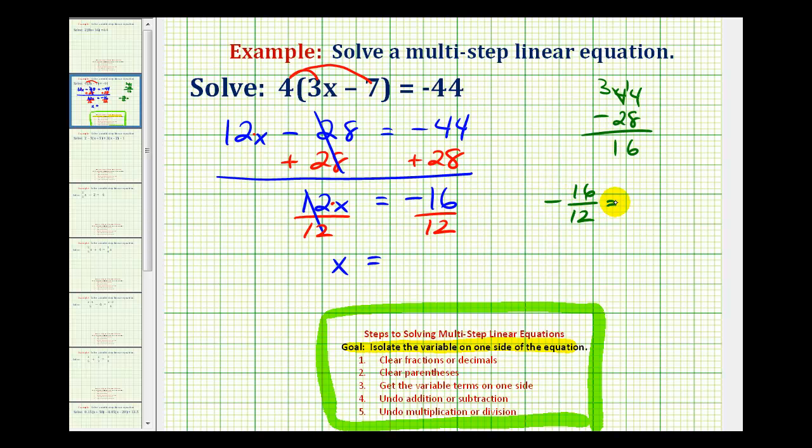These both share a common factor of four. We can write sixteen as four times four, and twelve as four times three. We can see the common factor of four here and here. So our solution in simplest form would be negative four-thirds.